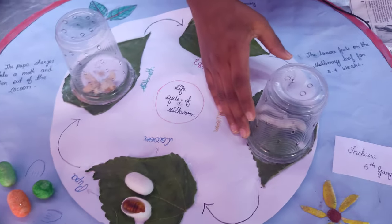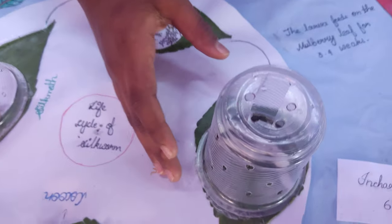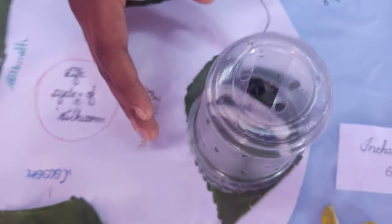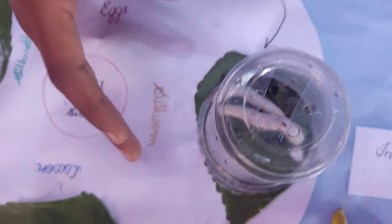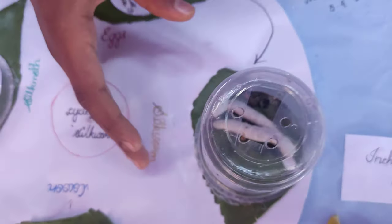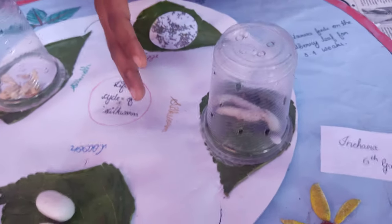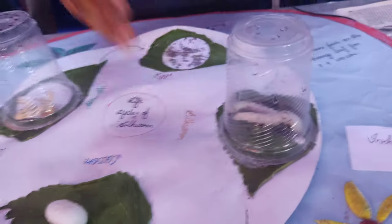The second stage is the silkworm. The silkworm arises when the egg cracks. In this stage, growth of the silkworm takes place. They feed on mulberry leaves.